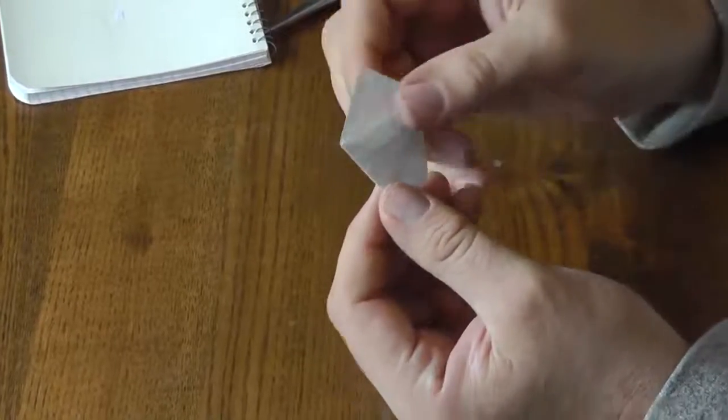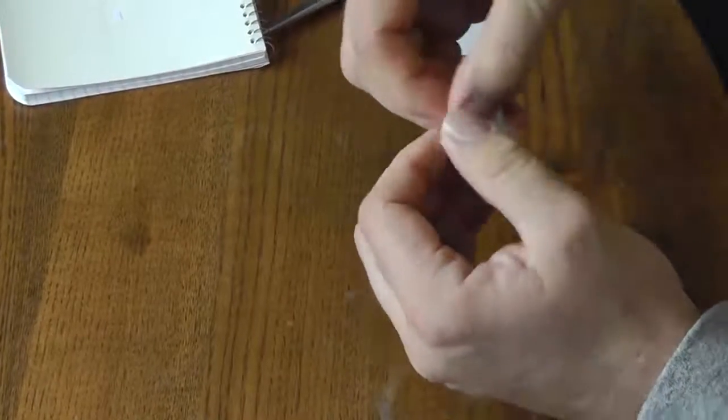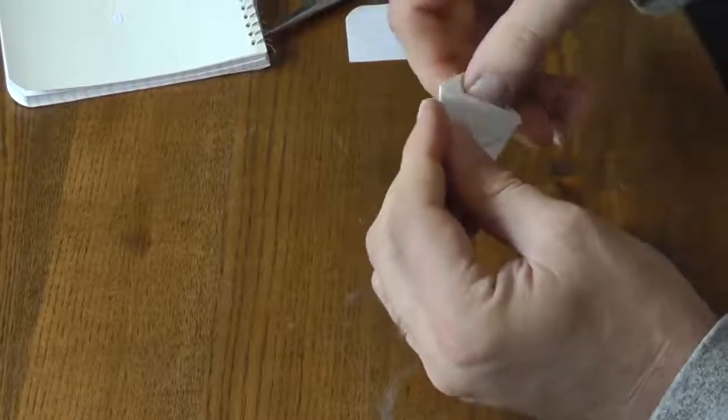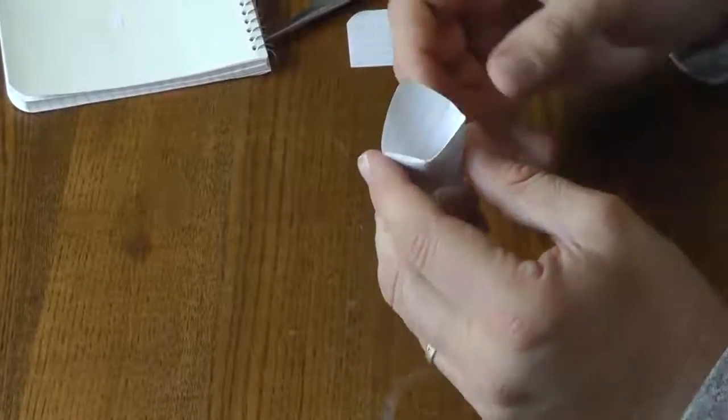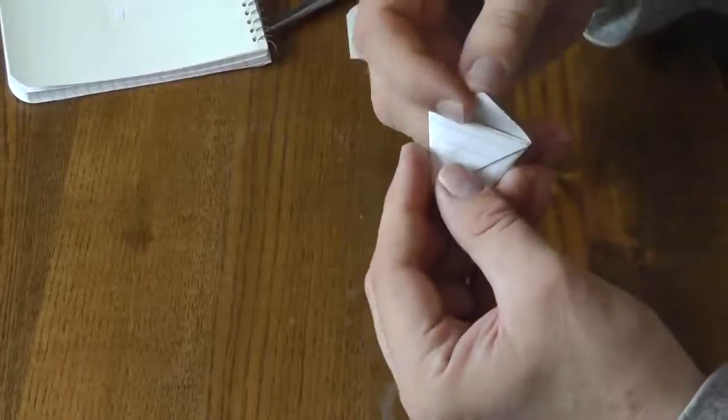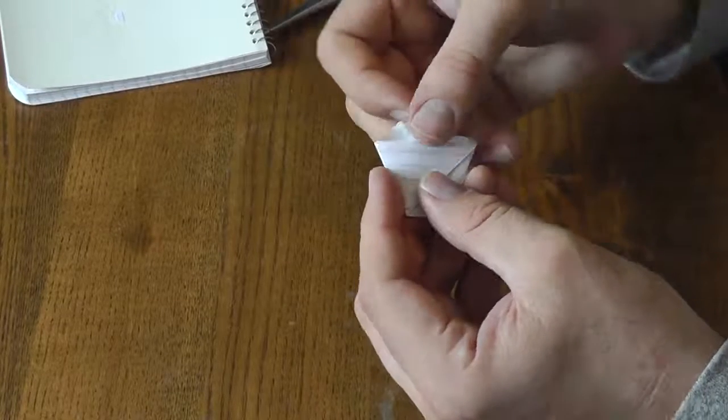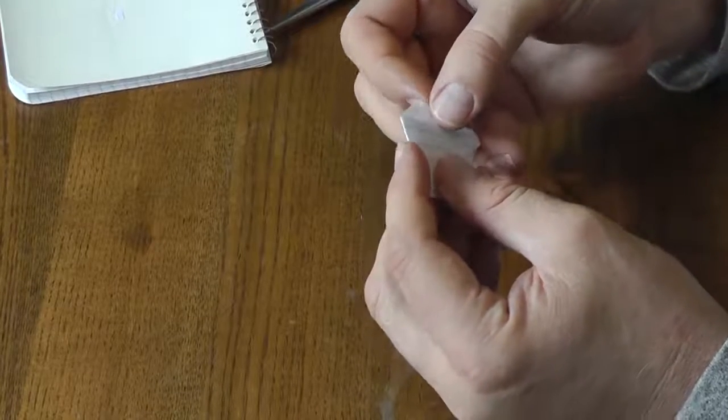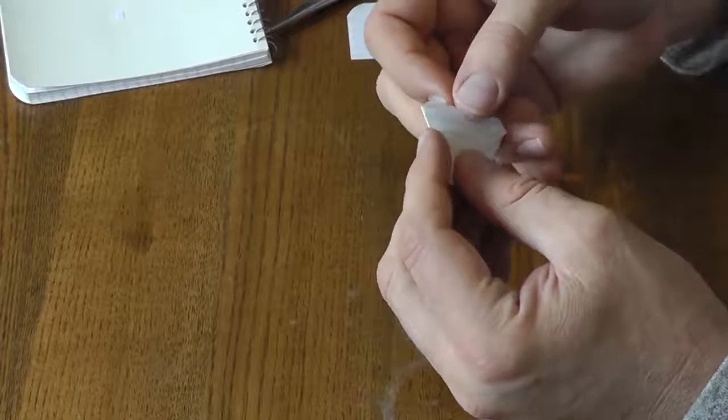And there's a little origami envelope. If you take this top one and pull it down, you can put your seeds inside of here like that. And then this one here goes down inside of there also. And then once you put your seeds in, you put this upper lip down inside of there.